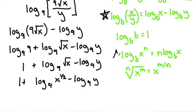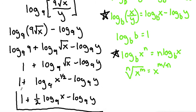And now we'll use this formula of taking the exponent and kicking it down to the front. So we'll write it as one plus one half of log base nine of x. And now since the one half is kicked to the front, we don't need to write it anymore. Minus log base nine of y. And that would be our final answer. This would be fully expanded.